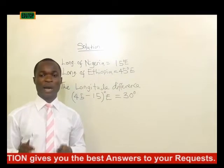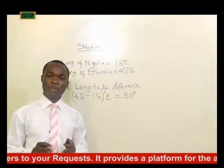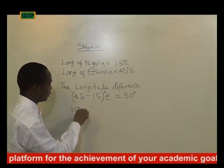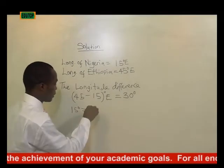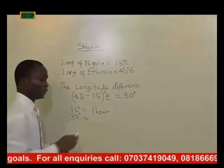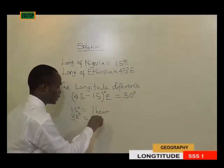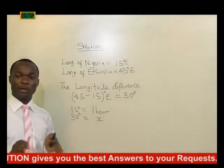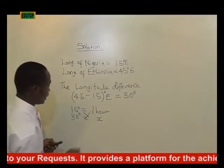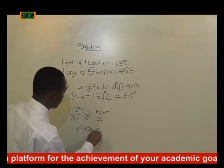If 15 degrees makes one hour, then what will 30 degrees make? Let's write it out: if 15 degrees makes one hour, therefore 30 degrees will make x — that is what we are looking for. Cross-multiplying this simple mathematical relationship, we get 15 times x equals 30.